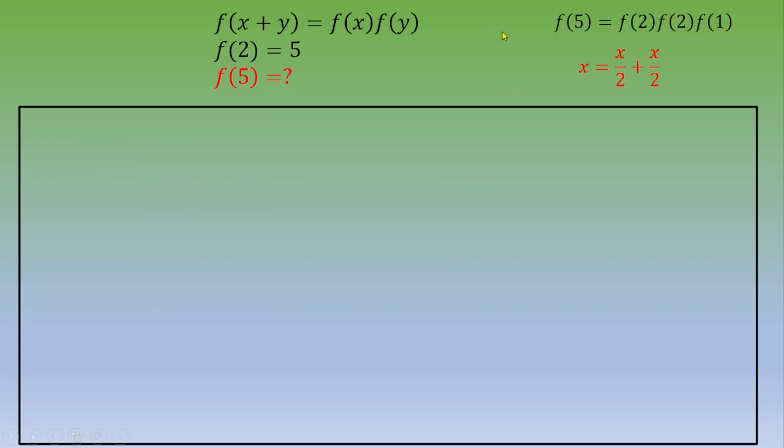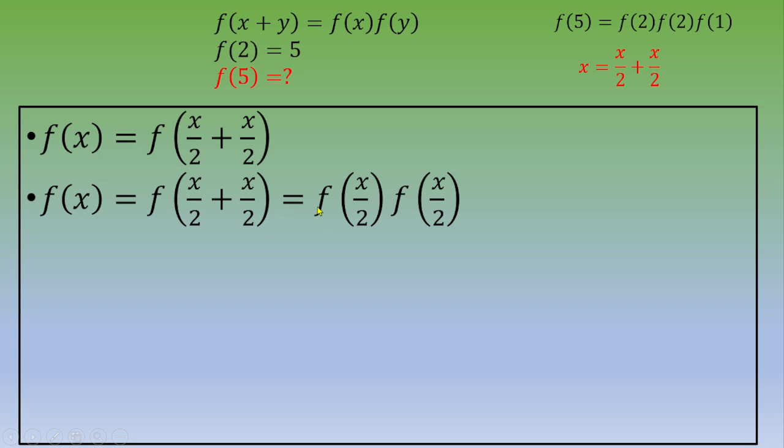Now, let's say that for every real number, x could be written as x over 2 plus x over 2. So f of x equals f of x over 2 plus x over 2. Another writing is f of x equals f of x over 2 times f of x over 2. So f of x is f of x over 2 squared. And for any real number, f of x is a non-negative number.